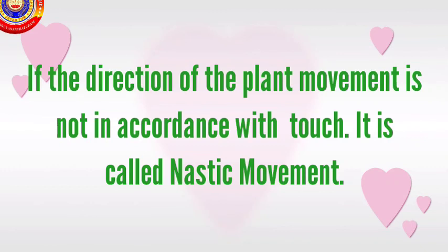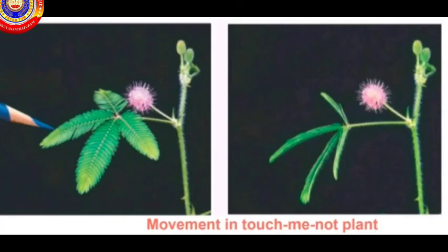Our next topic is nastic movement. If the direction of the plant movement is not in accordance with the stimulus, it is called nastic movement. Example: the touch-me-not plant.